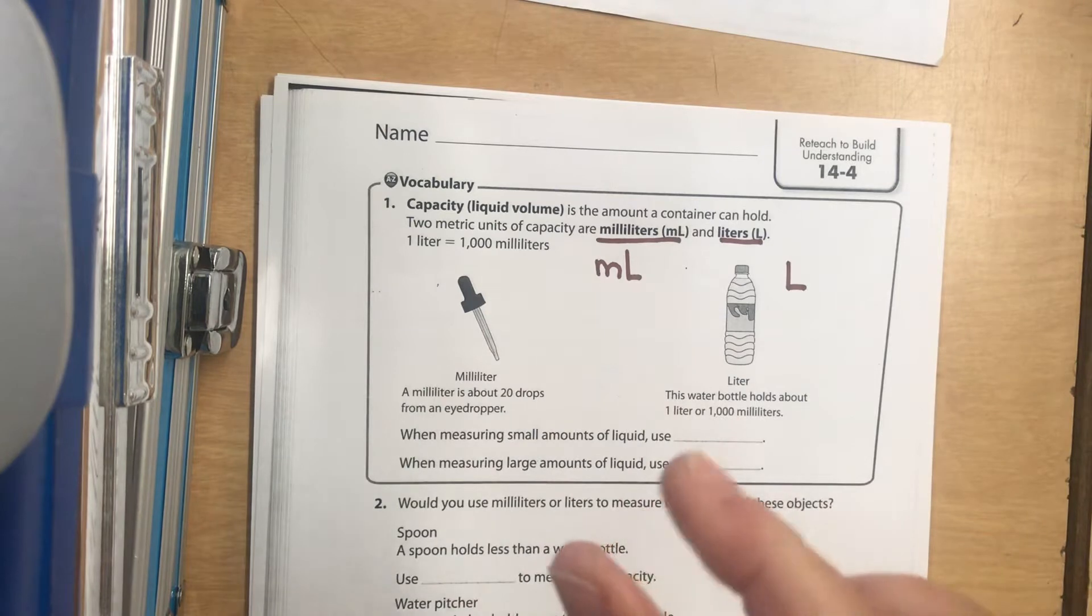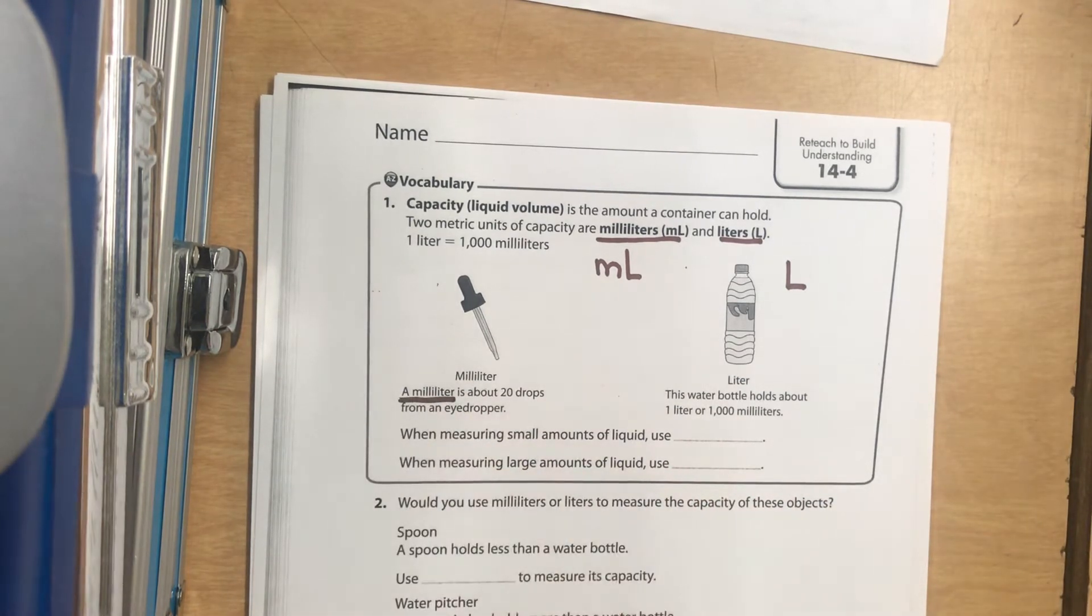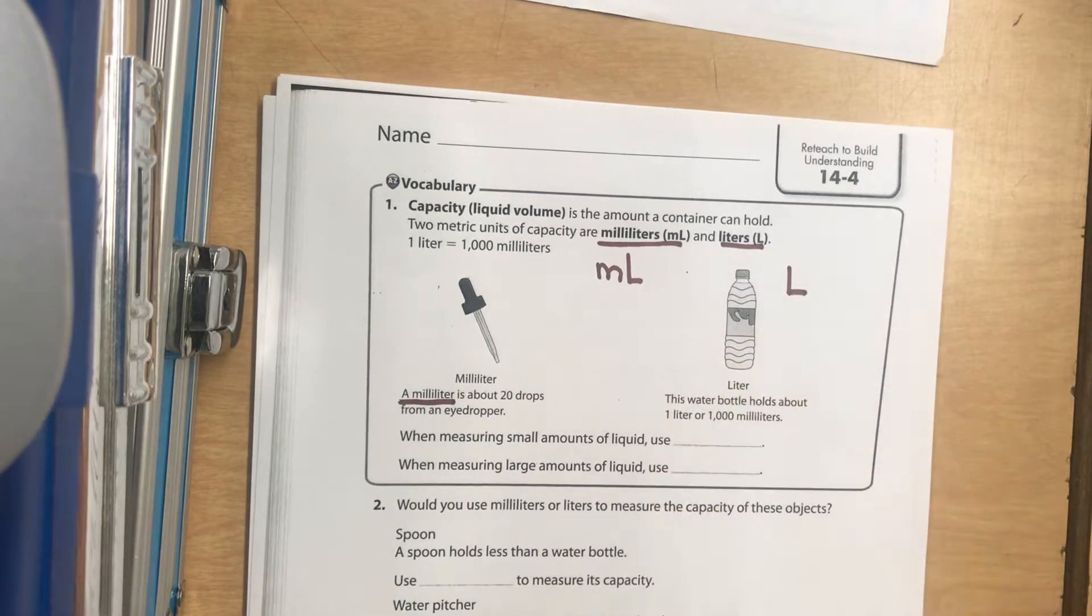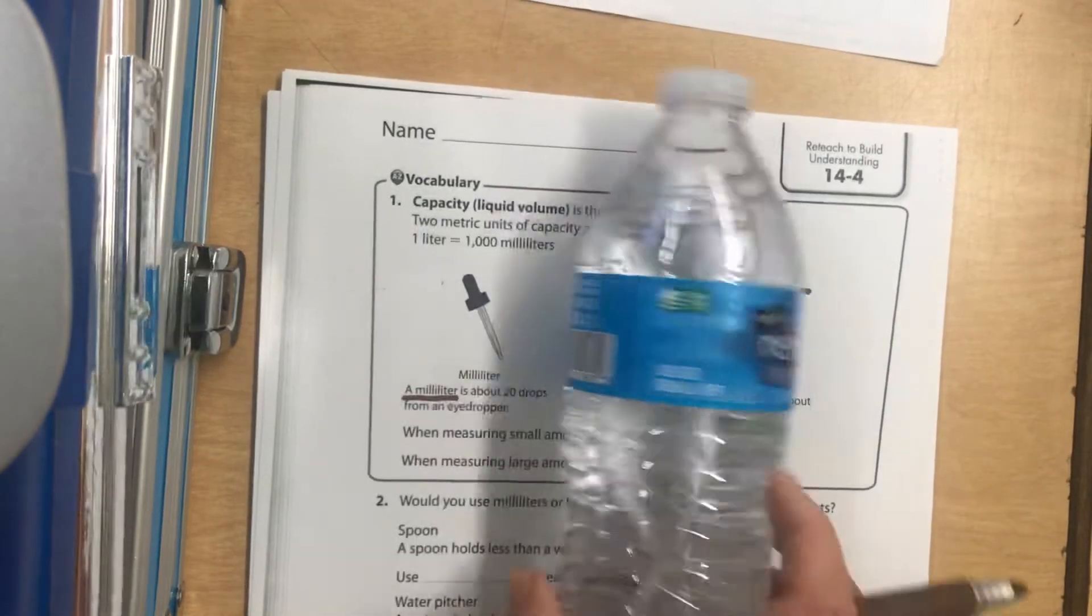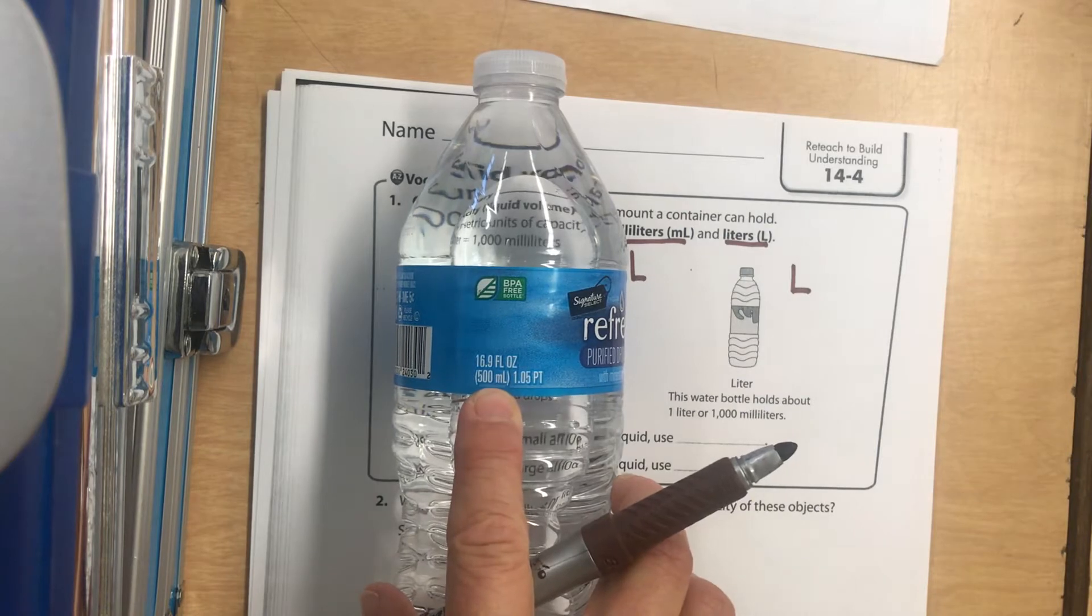But think of like an eyedropper, they come out one little drop at a time. 20 drops is one milliliter. So it's super, super small. And this is going to be like a big water bottle because this normal size water bottle, if you look at it, is 500 milliliters, 500 mLs.